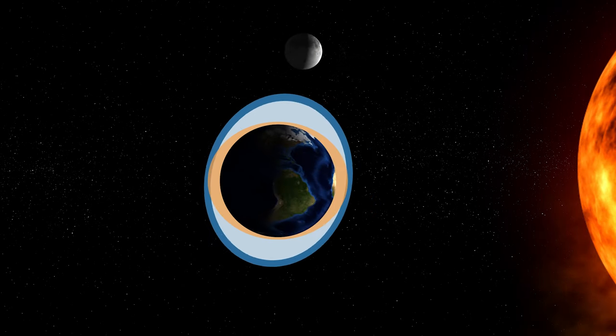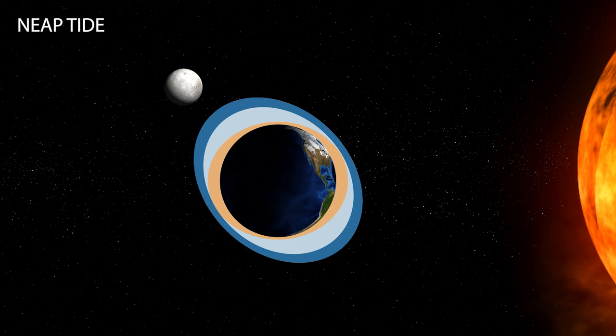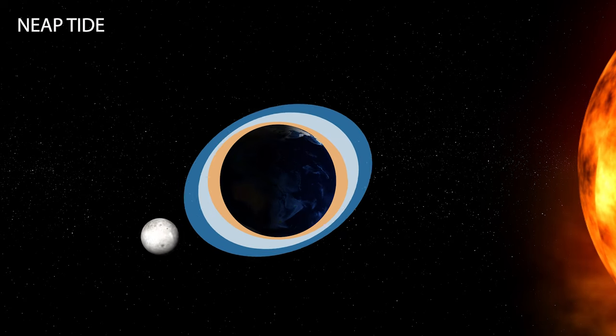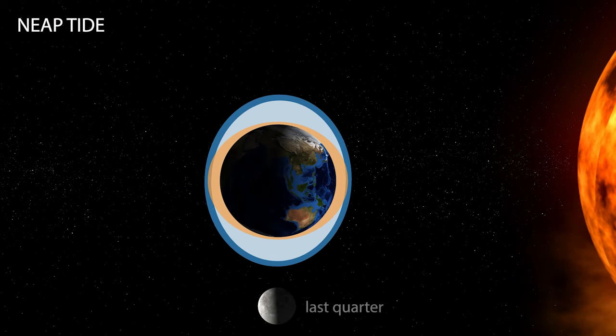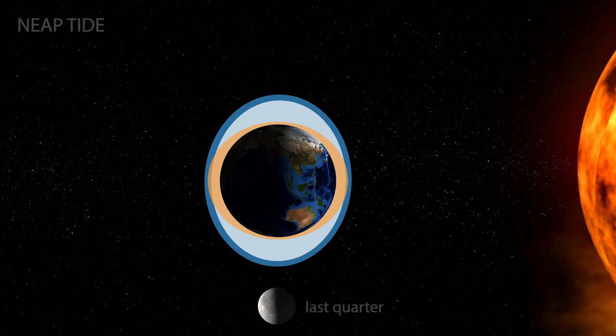Seven days after a spring tide are periods of moderate tides called neap tides. Neap tides occur when the moon and the sun are at right angles to each other.